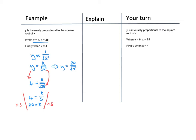Firstly, we took the formula that we generated and we substituted in the values that we knew. When X is 25, Y is 4. We can see that we can simplify this by finding the square root of 25, which is 5. So we end up with K divided by 5 is equal to 4.